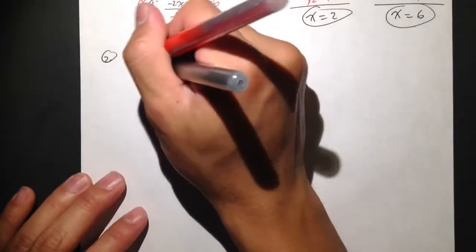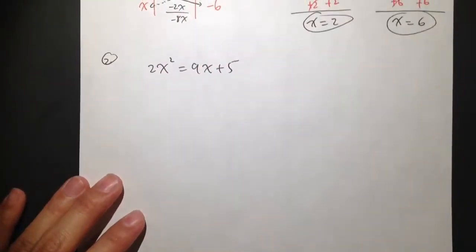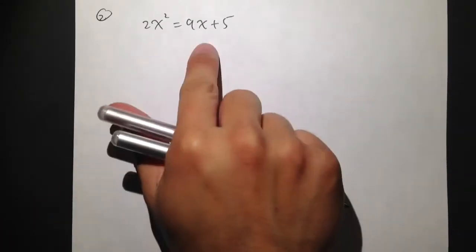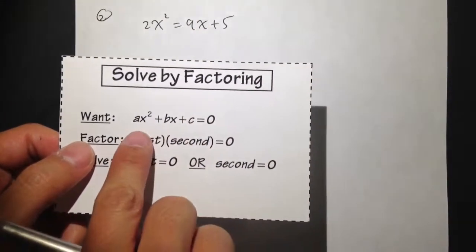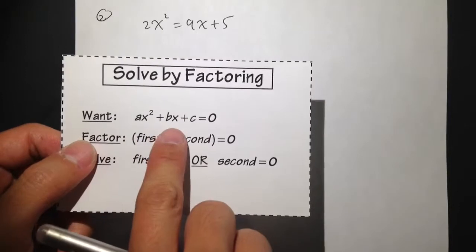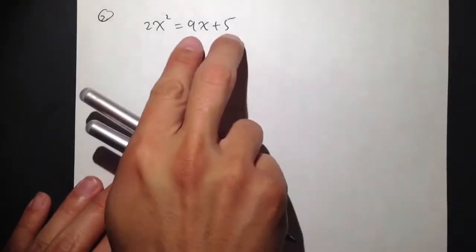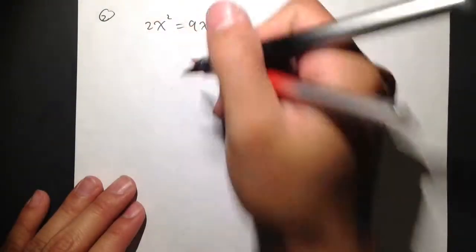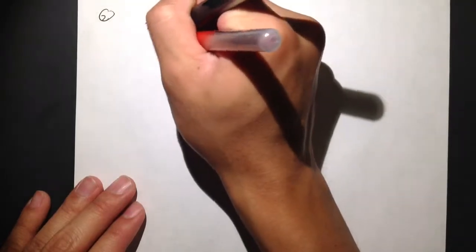Second example: 2x squared is equal to 9x plus 5. However, we see that we don't have one side equal to zero. Our goal is to have the equation in the form ax squared plus bx plus c equals zero. So let's bring everything onto the left-hand side. I will do that by subtracting 9x from both sides, so I can cancel the 9x on the right.